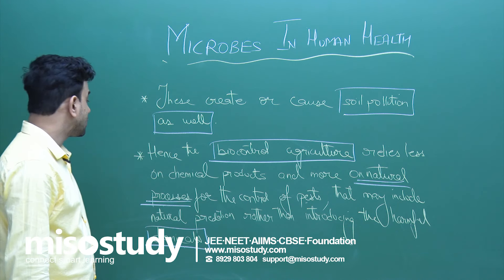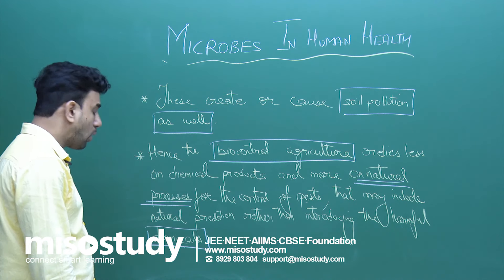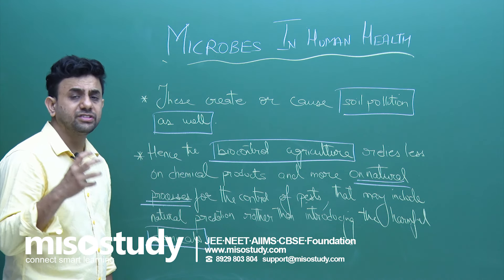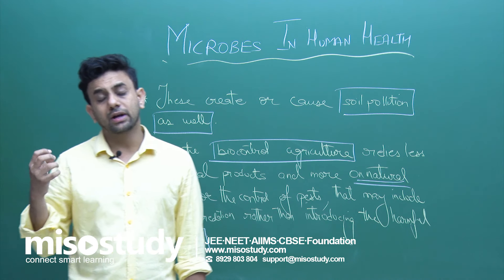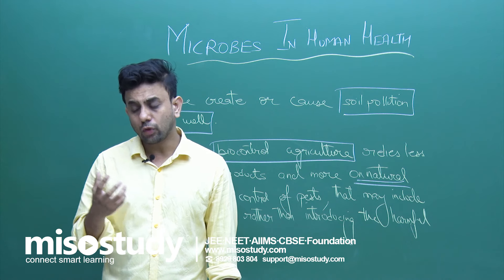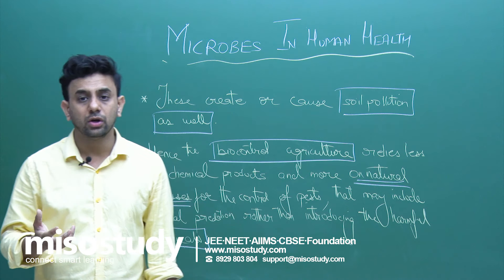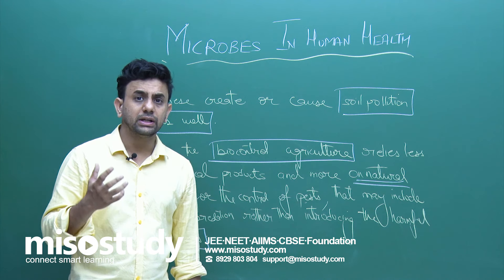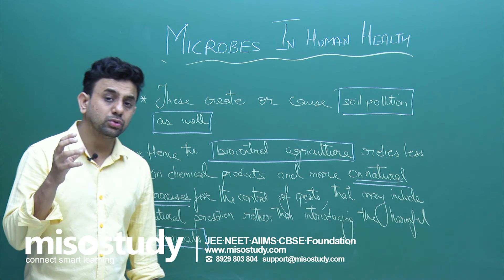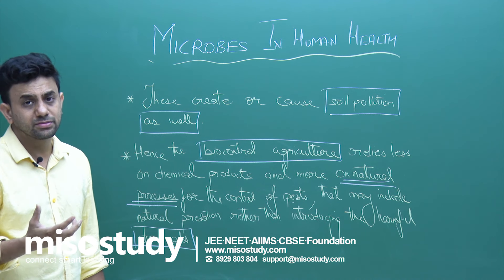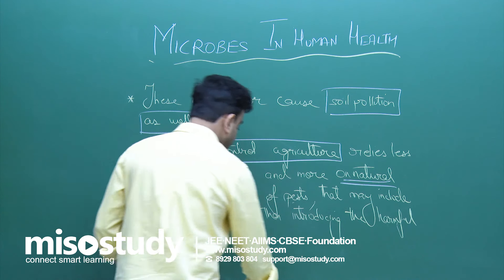Hence, biocontrol agriculture relies less on chemical products and more on natural processes. On the other hand, organic farming promotes biodiversity and health processes, meaning we should not try to kill organisms in ways that would reduce biodiversity.